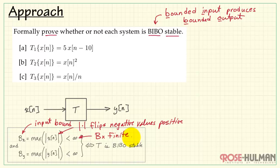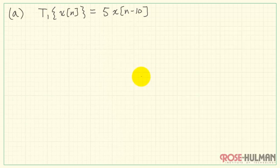We'll define, for the purposes of this proof, the bound on the input to be finite. We then calculate the bound on the output and check. Is that also finite? If so, we say that our system is bounded input, bounded output, stable.